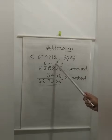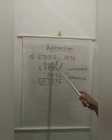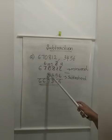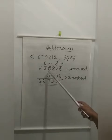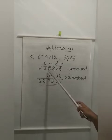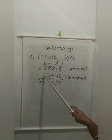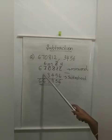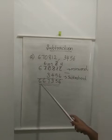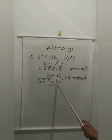Here we borrowed from 8, so what is remaining here? 7. So this 8 will not remain but instead 7. So 7 minus 4 is 3. Now the next digit is 0. Can we subtract 3 from 0? No. So again borrowing — 7 becomes 6, and this 0 becomes 10. So 10 minus 3 is 7. Here 6. Here there is no number, so I understand it is 0. So 6 minus 0 is 6. Here again the same procedure — 6. So we got the answer 6,67,356.